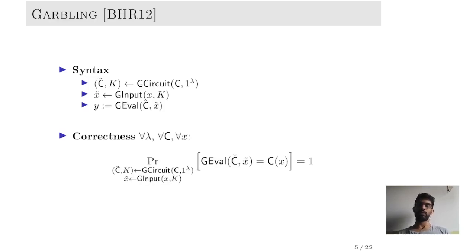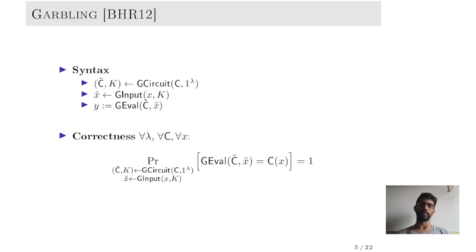As for correctness, it should hold that for every security parameter lambda, every circuit C and every input X, the evaluation of a garbled circuit on the garbled input should match the output of the circuit on X. It's worth pointing out that the garbling of the circuit is independent of the input X. Therefore, one could think of the whole garbling process being split into an online phase and an offline phase — in the offline phase one generates the garbled circuit, whereas in the online phase one generates the garbled input.